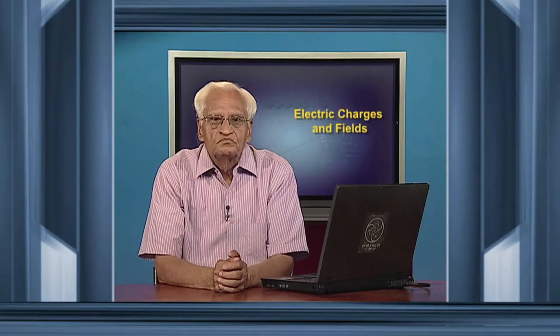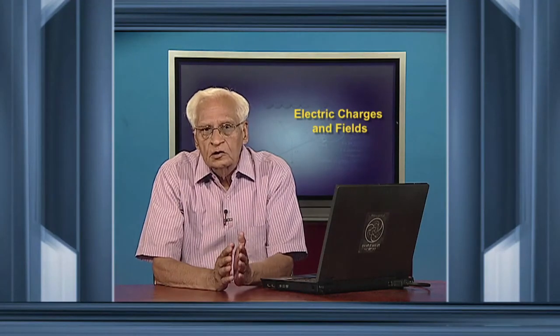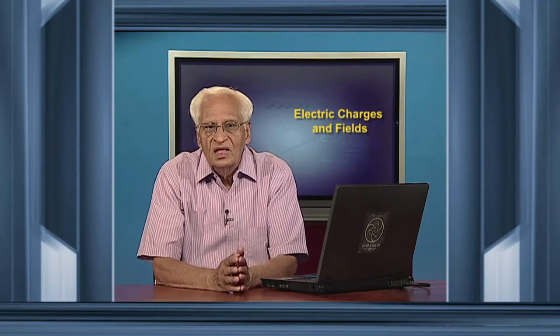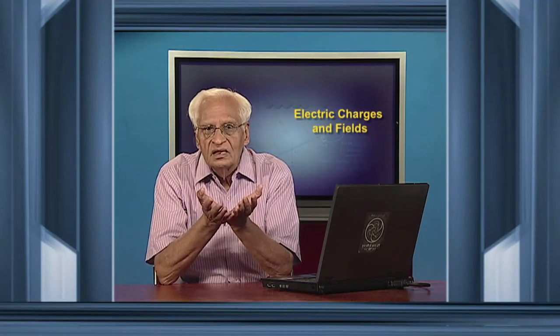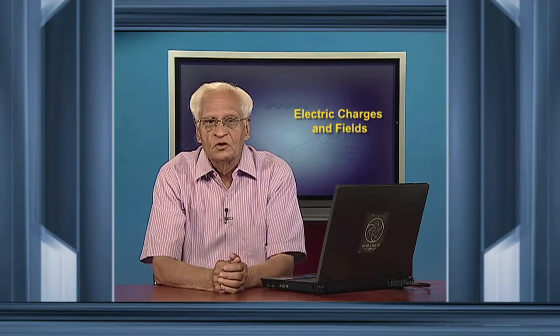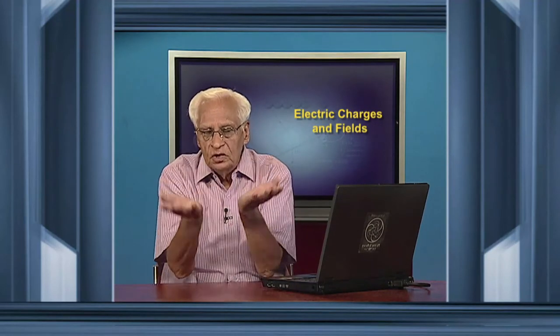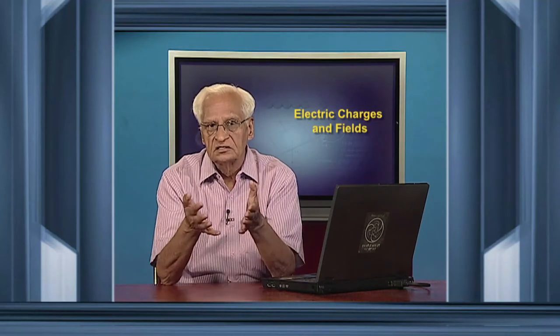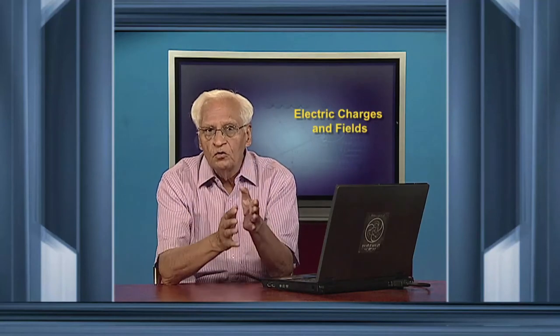In the last lecture, we introduced the idea of flux and then stated Gauss theorem, which says that the flux through a closed surface is equal to the charge inside the surface divided by epsilon 0. We also found the electric field due to a non-conducting sphere which is charged uniformly. And now, we find potential due to a non-conducting uniformly charged sphere.